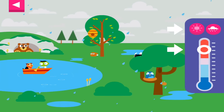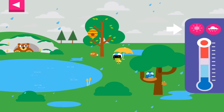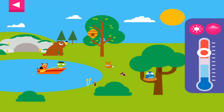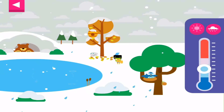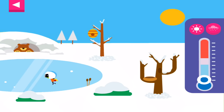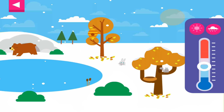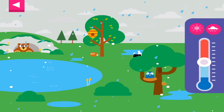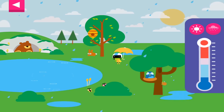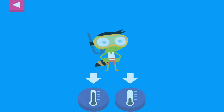Drag the circle up and down the thermometer to change the temperature and control the weather. You made it rain! You made it snow!